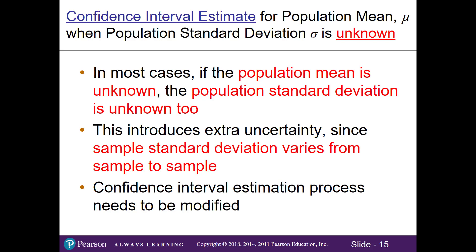In this video we'll continue our conversation about the confidence interval estimate for a population mean. Except now, what do we do when we don't know the population standard deviation? In real-world application, we often do not know the population standard deviation, so we have to modify our confidence interval estimation process. This is because when we're working with samples, our sample standard deviation varies from sample to sample, so we have to modify our process to account for this variation.